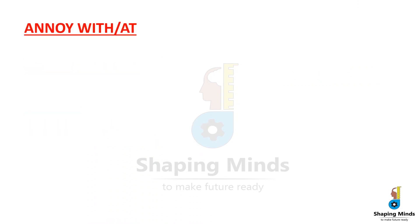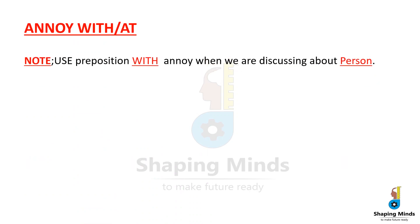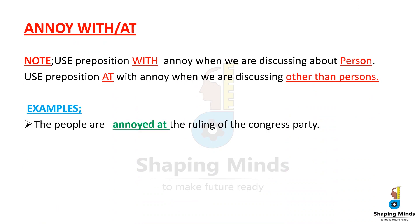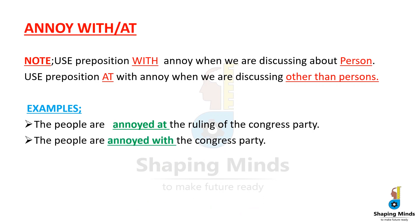Word four: 'annoy' — used with prepositions 'with' and 'at.' We use 'with' when discussing a person, and 'at' when discussing something other than a person. For example: 'The people are annoyed at the ruling of the Congress party.' Here, 'at' is used because the people are annoyed at the ruling — not the party directly. In the second example, 'with' is used because the people are directly annoyed with the Congress party as a group.